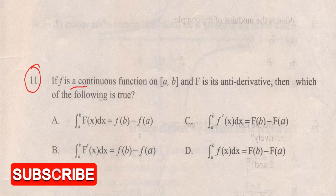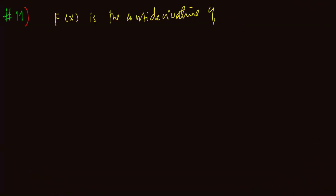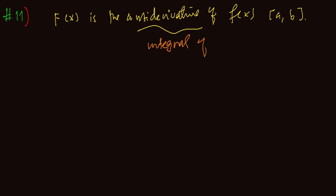If F is a continuous function on a closed interval from A to B, and capital F is the antiderivative of f, then which of the following is true? So capital F is the antiderivative of f of x on the closed interval A to B. That means equivalently, capital F prime at x is equal to small f of x on the closed interval from A to B.